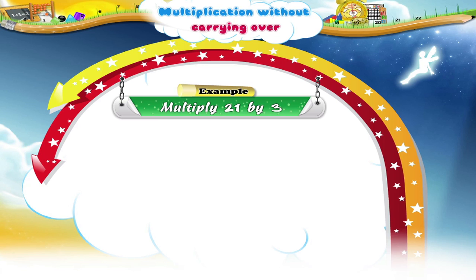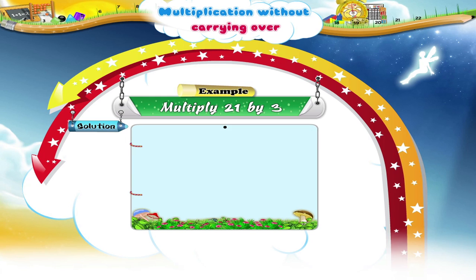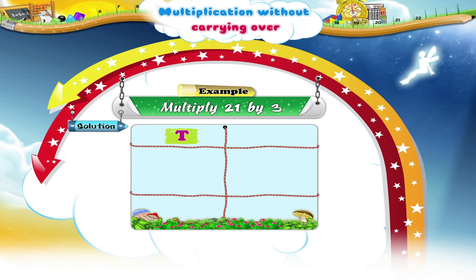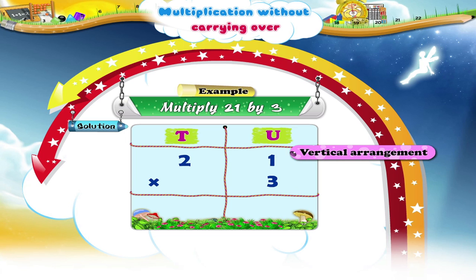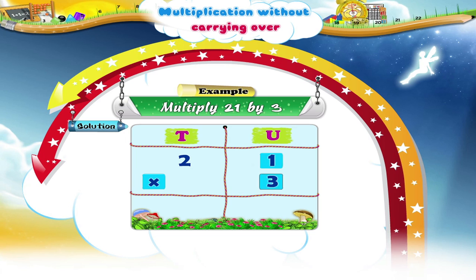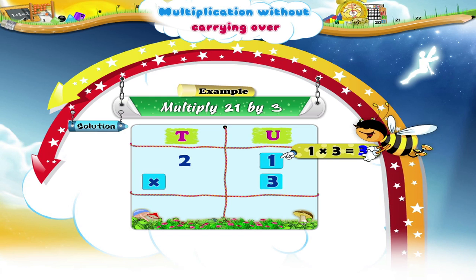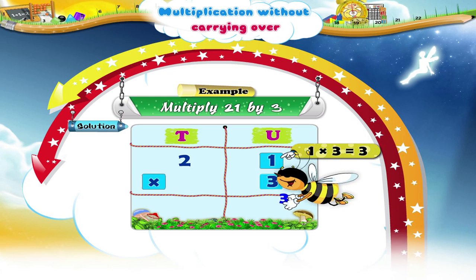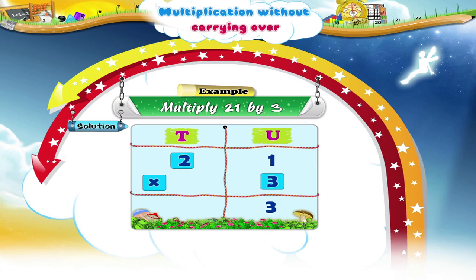Multiply 21 by 3. 1 three is 3. 2 threes are 6. The product is 63.